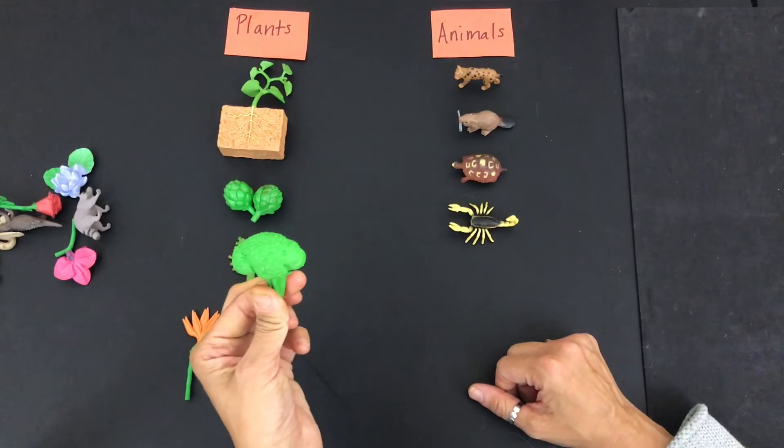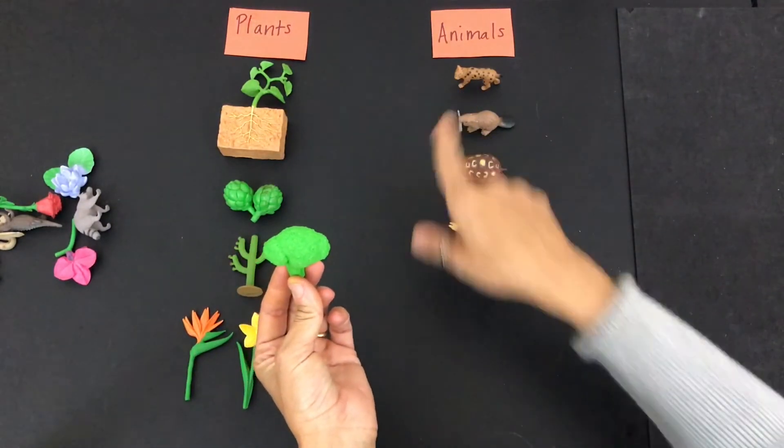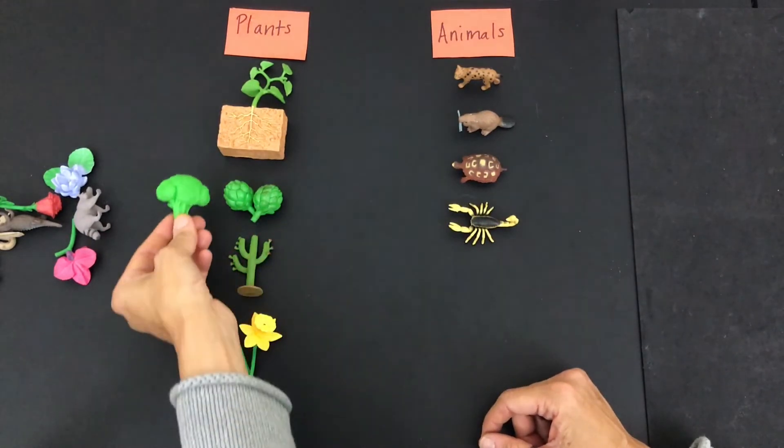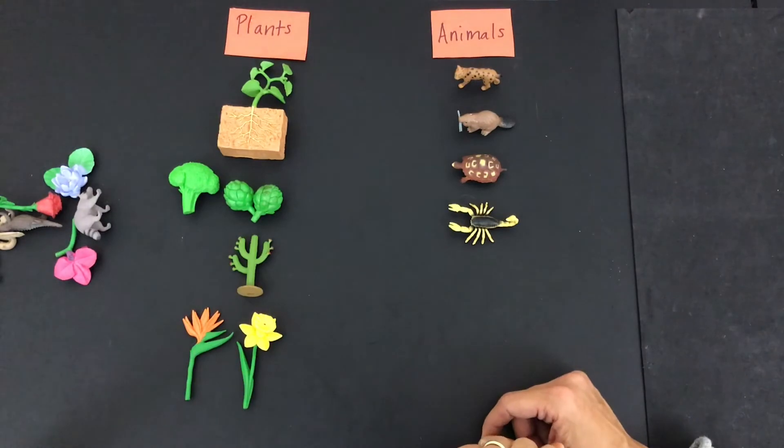Yum, I love this. Who loves to eat broccoli? Is broccoli a plant or an animal? It's a plant. It grows on a plant. We're actually growing some in our garden.